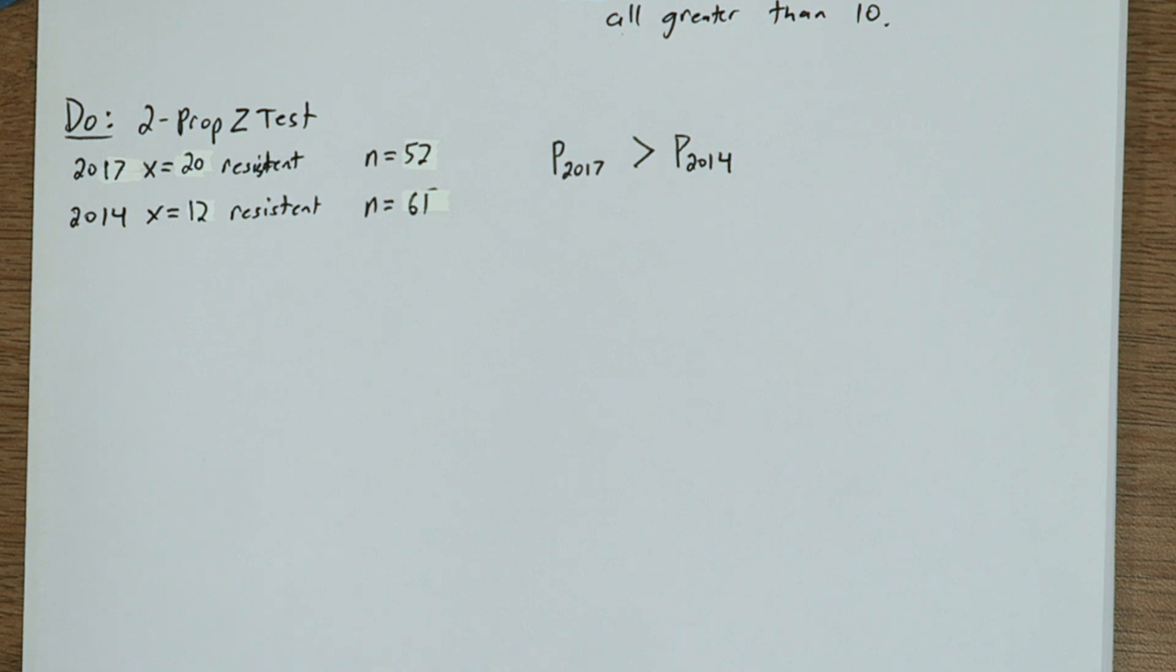12 of 61 were resistant. It will also ask us which direction we want our test to go in. We're interested in whether this resistance proportion increased, so we want 2017 greater than 2014.